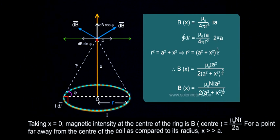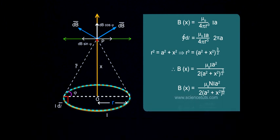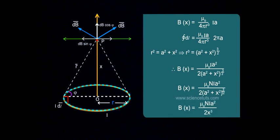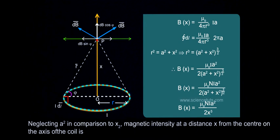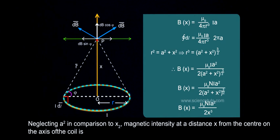For a point far away from the center of the coil as compared to its radius, x much greater than a, Bx equals mu_0 n i a² by 2x², neglecting a² in comparison to x².